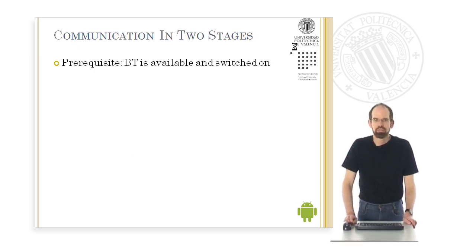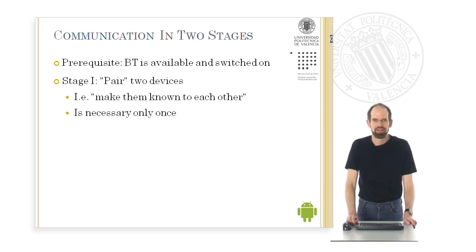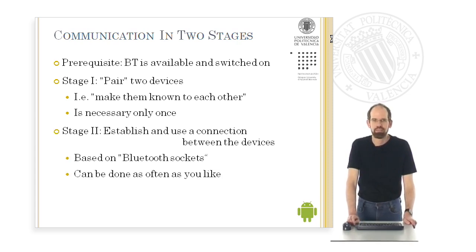Bluetooth communication requires two stages. First, Bluetooth has to be available and switched on in the devices used. The first stage is to pair the two devices — that is, to make them known to each other — which is necessary only once. The second stage is then to establish and use a connection between the devices, which is based on so-called Bluetooth sockets, and this can be done as often as you like.